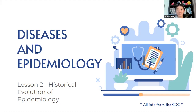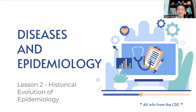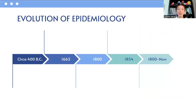Today we're going to talk about the historical evolution of epidemiology. All information is from the CDC. So the evolution of epidemiology — I've put a kind of rough timeline here, and if you can see, we start from circa 400 BC to now.